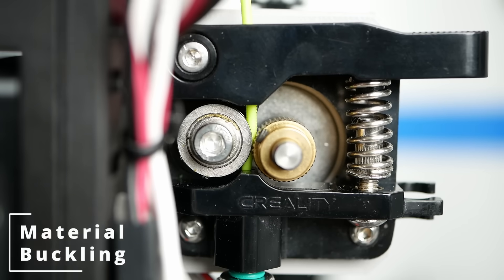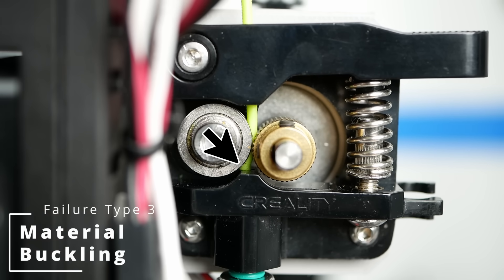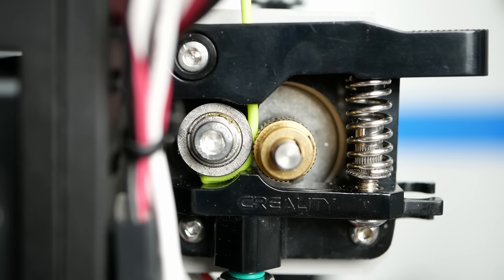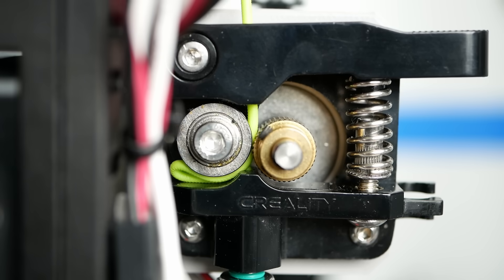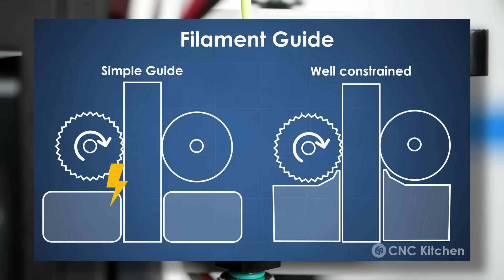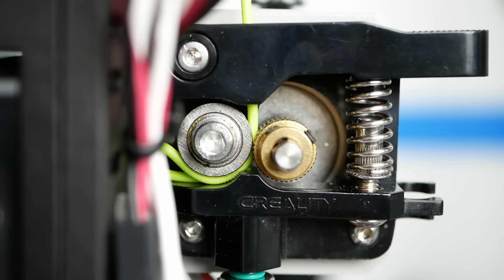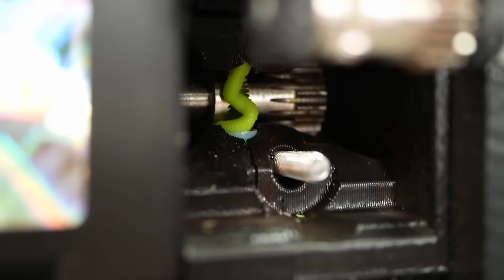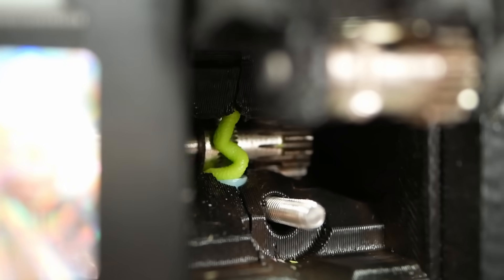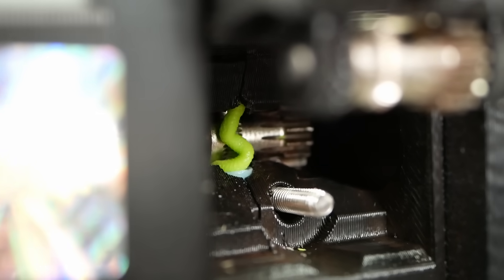Finally there's material buckling which usually happens with flexible materials. Here the column of filament buckles away under the load and when the filament path is not perfectly constrained, it will find a way to get entangled in the extruder gears. Everyone who has already printed with flexibles will know that phenomenon, which usually happens when printing too fast.